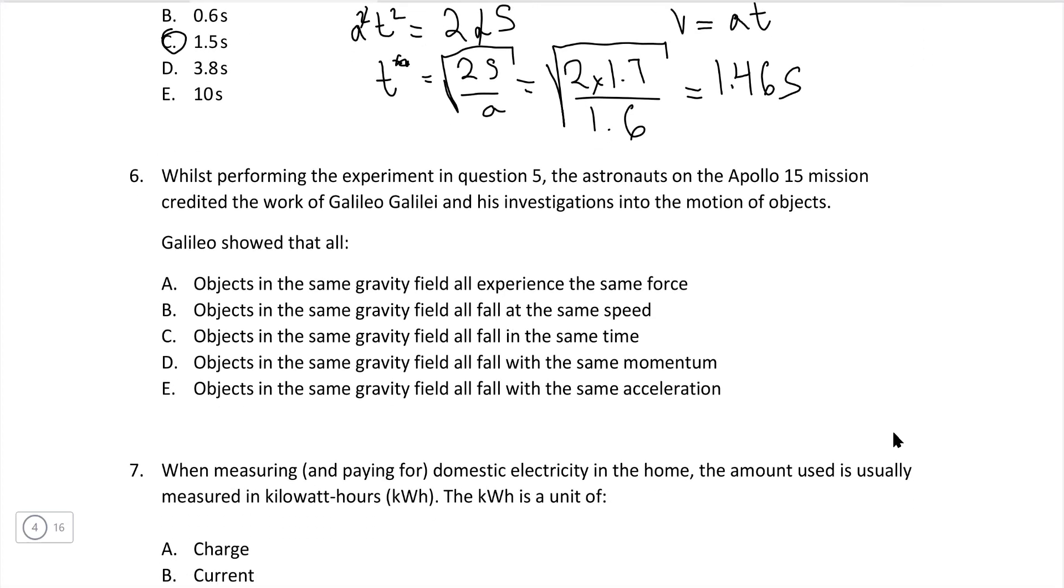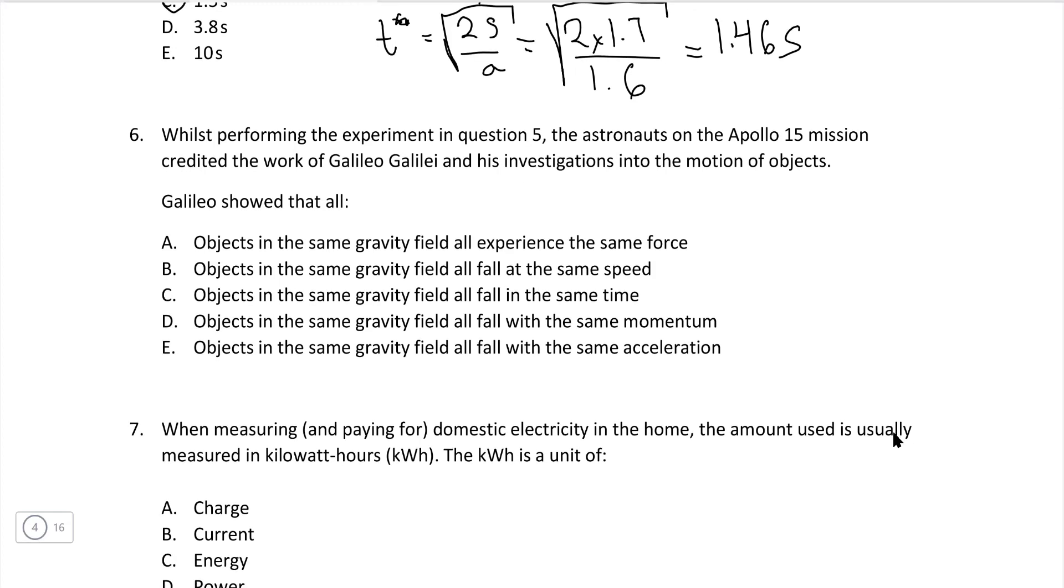Question 6. Whilst performing the experiment in question 5, the astronauts on the Apollo 15 mission credited the work of Galileo Galilei and his investigation in the motion of objects. He showed the following. That was a very important result. He showed that objects in the same gravitational field all fall with the same acceleration. So correct answer is E.